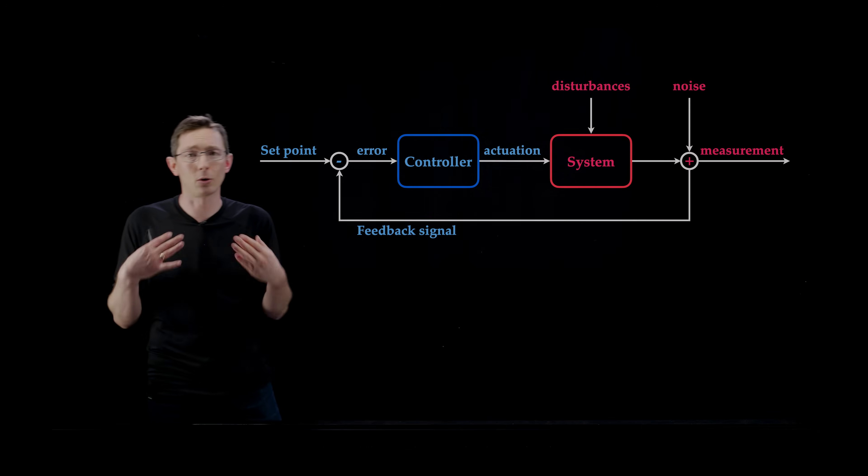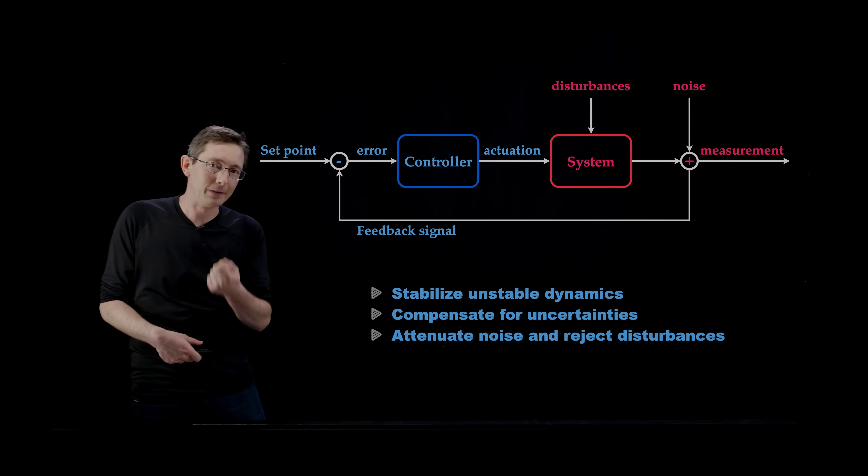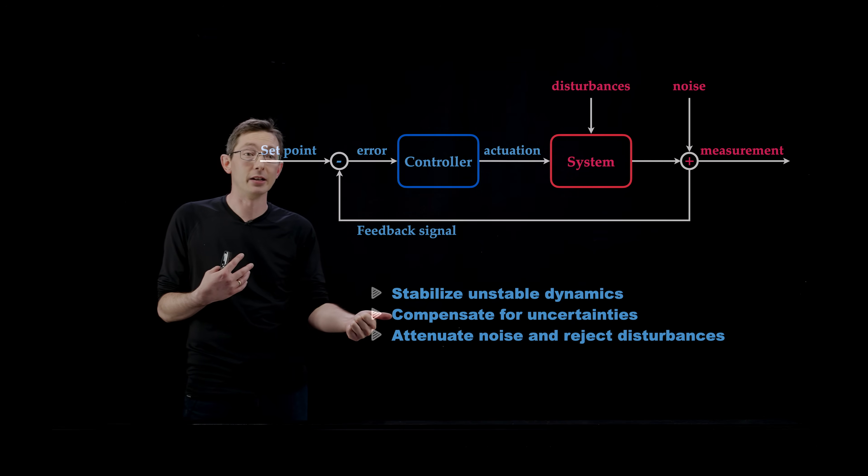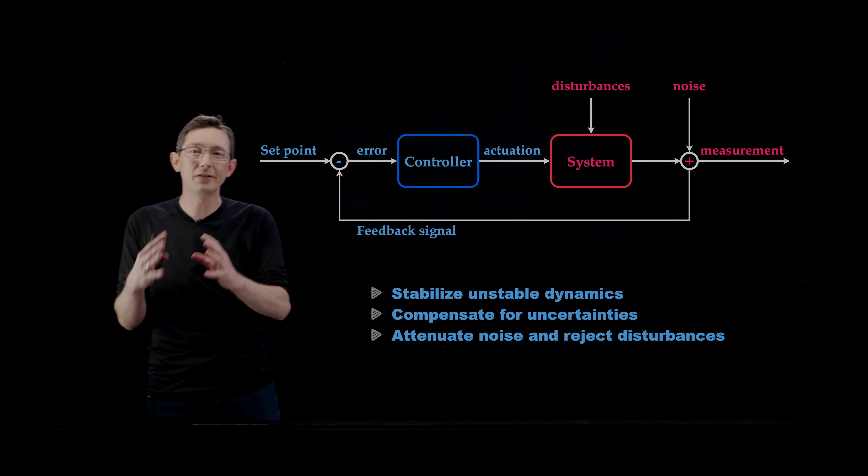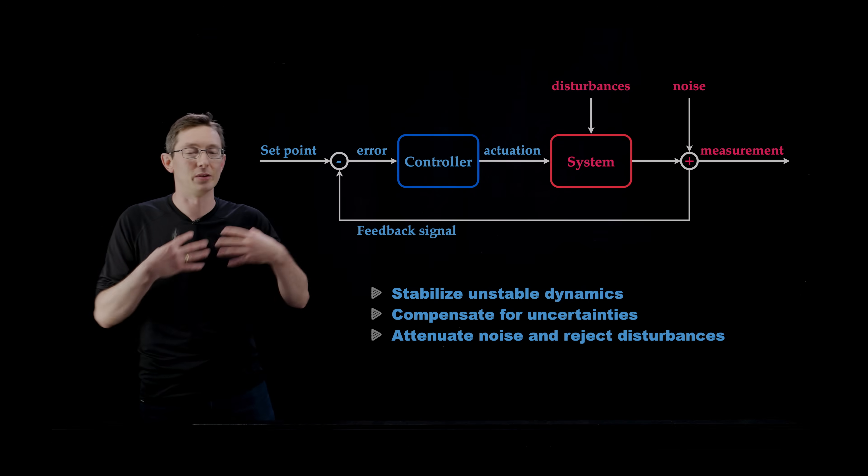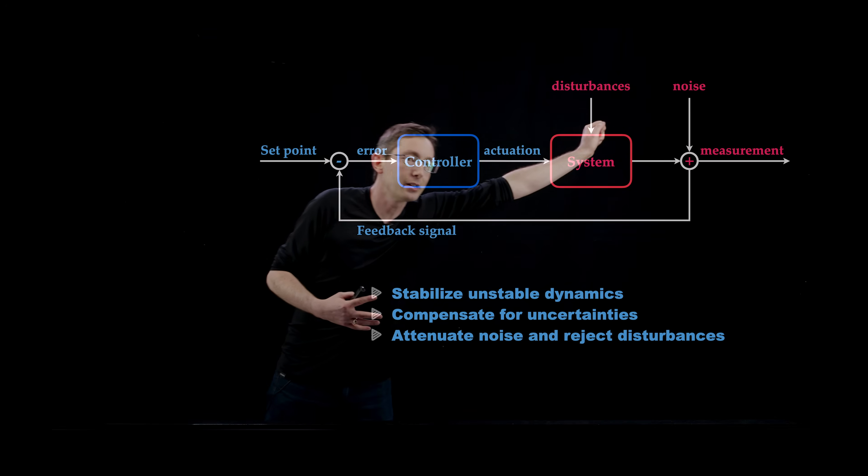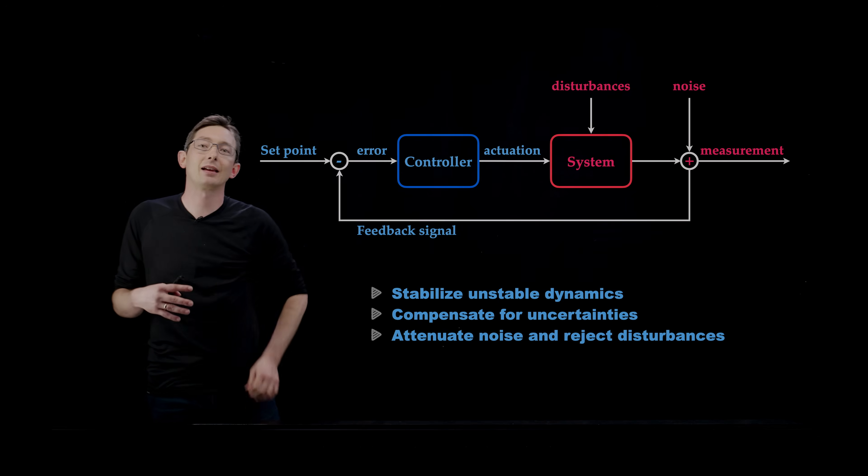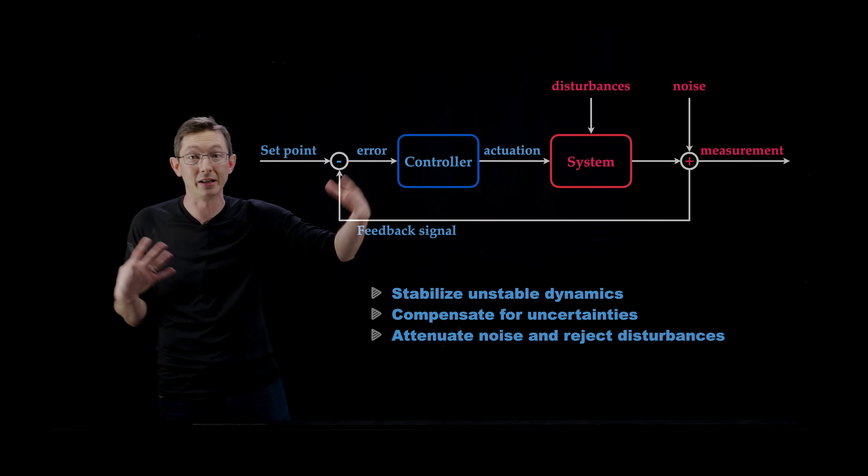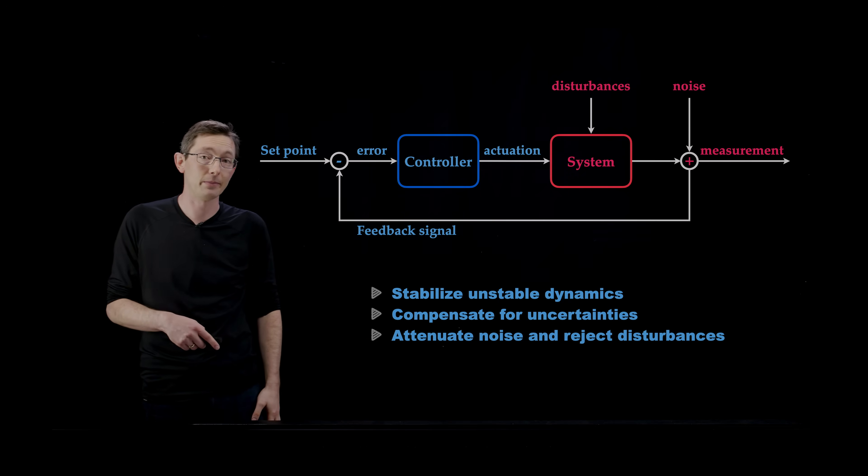But I can't stress enough the importance of feedback and measurements in your system. Of course, those measurements are going to have noise. Of course, they're not perfect. But what feedback allows you to do is especially compensate for uncertainties in your model. So even with a relatively poor model with uncertainties, with disturbances, with noisy measurements, measuring your system and feeding it back can have a huge impact on your ability to control even very complex nonlinear high dimensional dynamics.